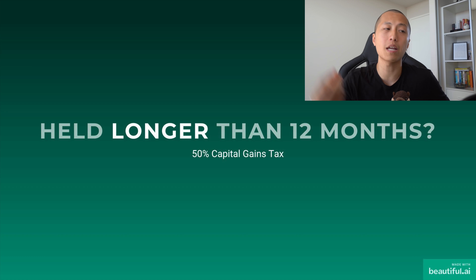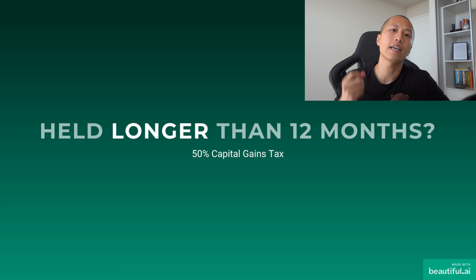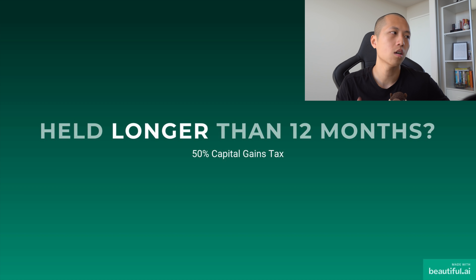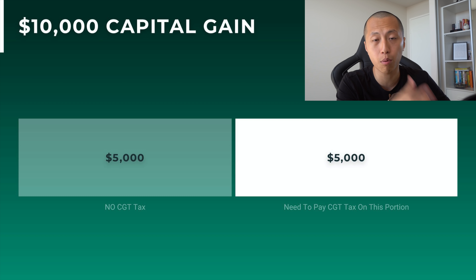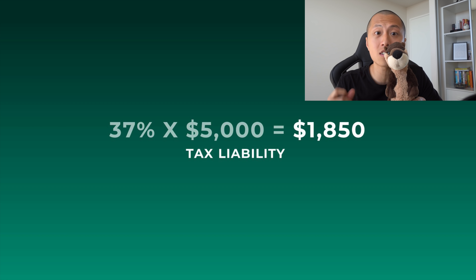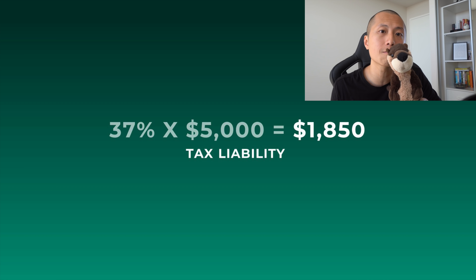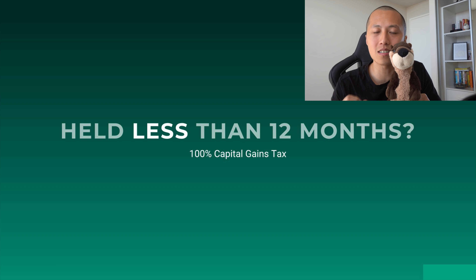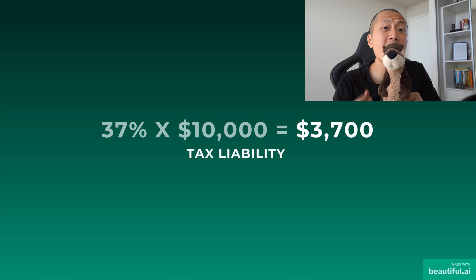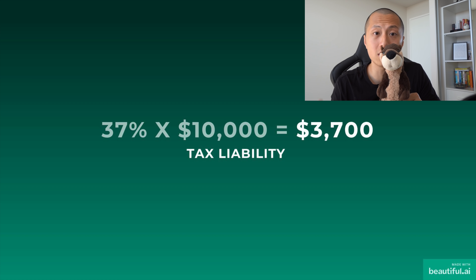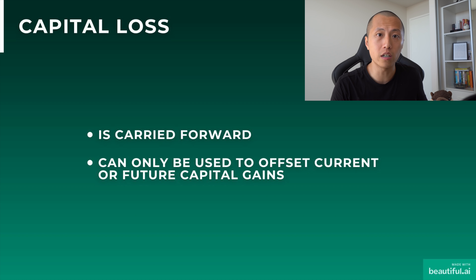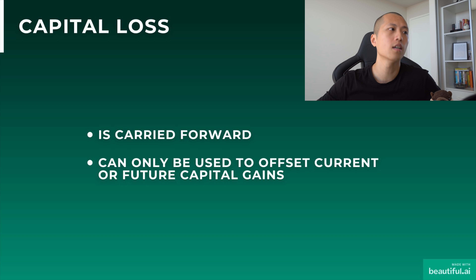Say Otto makes $100,000 a year, putting him in the 37% income bracket. If he held onto shares for longer than 12 months and sold them for a $10,000 profit, he's eligible for a 50% CGT discount. So instead of paying tax on $10,000, he only pays tax on $5,000 — which at 37% is approximately $1,850. If Otto held those shares for less than 12 months, he'd pay tax on the entire $10,000, which at 37% is approximately $3,700.